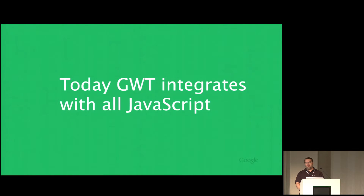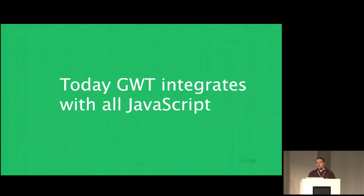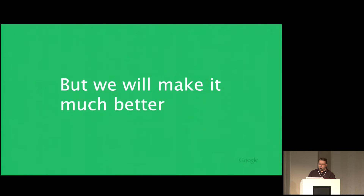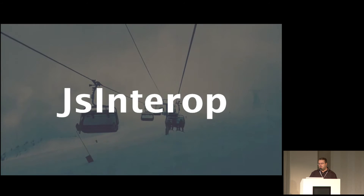GWT already integrates with JavaScript today. You can write overlay types, you can write JSNI methods. But it's kind of a pain. A lot of it looks like it could just be auto-generated — you're thinking to yourself, why do I have to write this method when it looks like it could be automated? We should be able to make this a lot better with GWT by reducing the amount of boilerplate needed. We call that JS Interop.